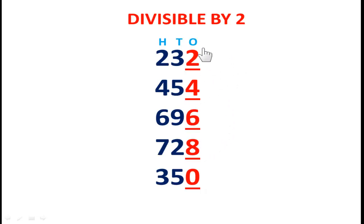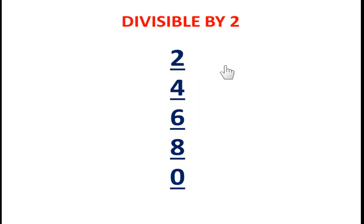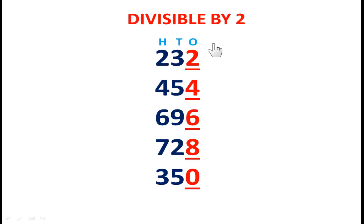In the first number, the ones place digit is 2; in the second number, the ones place digit is 4; in the third number, it is 6; in the fourth number, it is 8; and the fifth number has 0 in the ones place. So if any number has 2, 4, 6, 8, or 0 in the ones place, we can say that number is divisible by two.